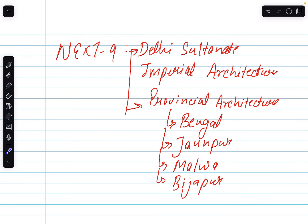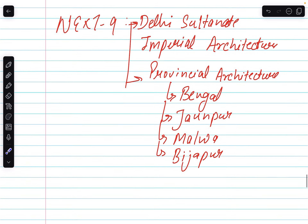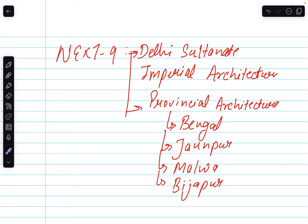This is the basic introduction to what is coming. We have covered temple architecture, ancient architecture, stupas, sculptures, paintings, potteries, and now we are moving towards Indo-Islamic architecture, after which we will cover the British period. This is all for today. For the next lecture it will be Delhi Sultanate and provincial architecture. Keep studying, keep working hard. Thank you all and I will see you in the next one. Bye bye, take care.